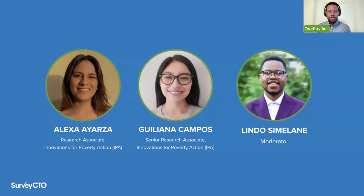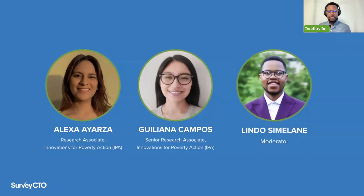Our second presenter is Juliana Campos, who is a senior research associate also at IPA Peru. She's an economist who graduated from the National University of San Marcos in Peru. She has worked on projects on gender, education, and governance, amongst others, and has experience in the design, implementation, and evaluation of randomized controlled trials in Peru and elsewhere. Currently, she is in charge of a census project in collaboration with the Ministry of Education in El Salvador on parental migration, with the goal of identifying policy actions that can mitigate negative effects. She's also worked on telephonic surveys and census projects for women at risk of intimate partner violence in rural areas.